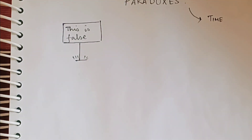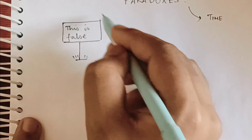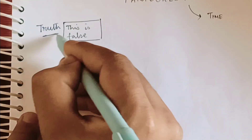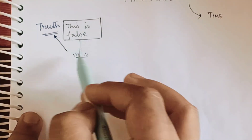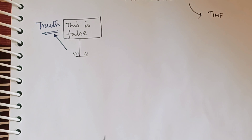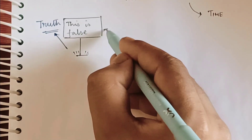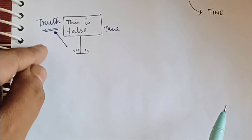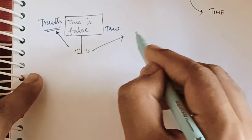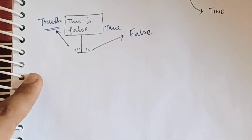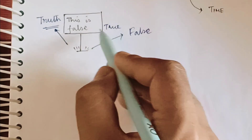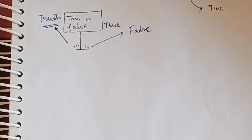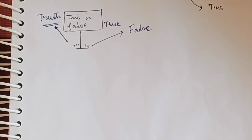Suppose somebody is pranking you with this sign. That means he wants to show there is truth behind this path — but the sign is saying 'This is false,' which means this sign is false, which means the original writing should be 'This is true.' But it is written 'This is false' because there is truth behind it. But if it is actually leading to false, then the sign is true because whatever is written on it is correct.